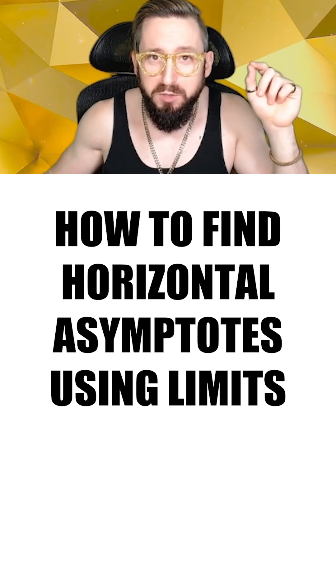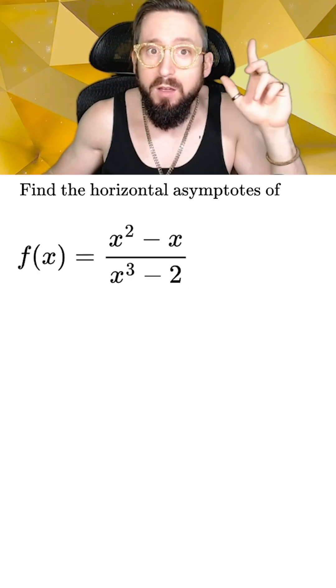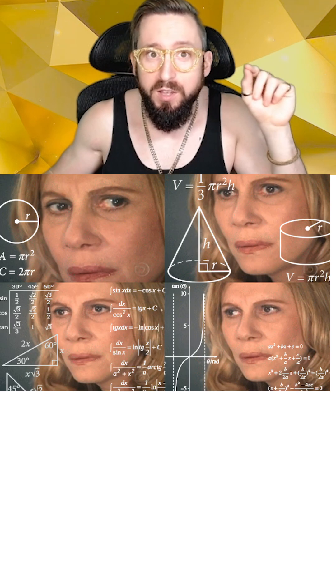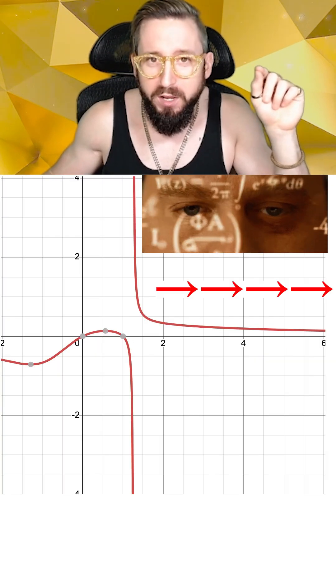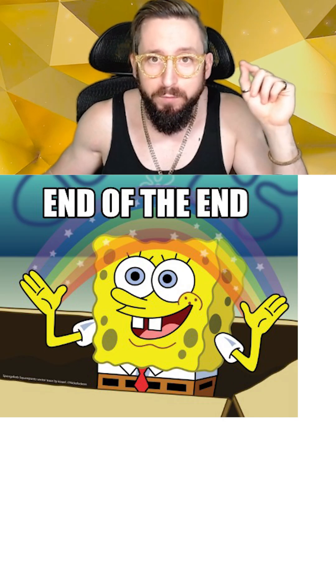Here's the proper way to find the horizontal asymptotes of a function by using limits at infinity. The trick to finding horizontal asymptotes is to figure out what happens to the function as x gets big and we go really far to the right, which is also called determining the end behavior of the function.